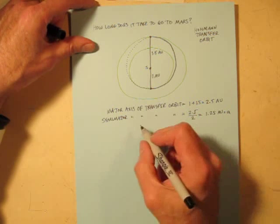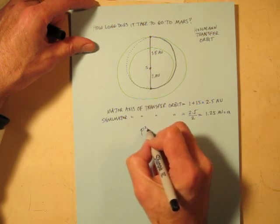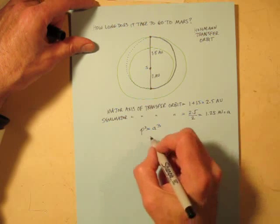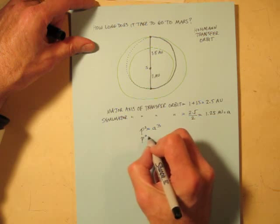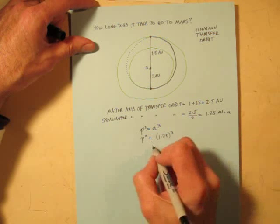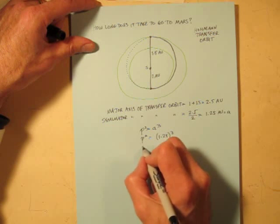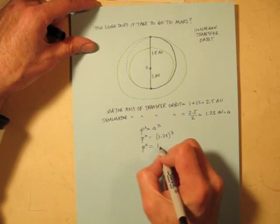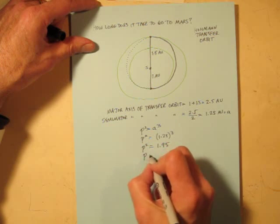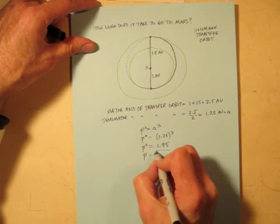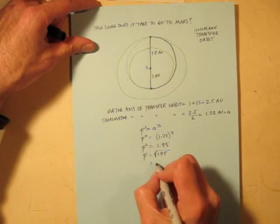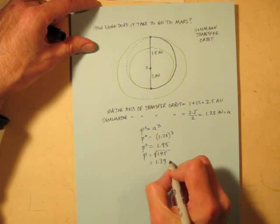So remember Kepler's third law, P² = A³. A is 1.25, so P² = 1.25³. And you can do that on your calculator and find out that means P² equals about 1.95. And that means P is the square root of 1.95 or about 1.39 years.